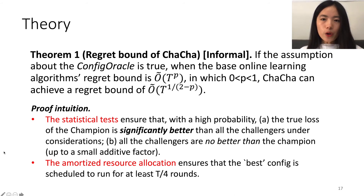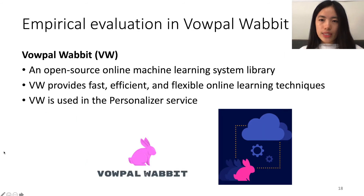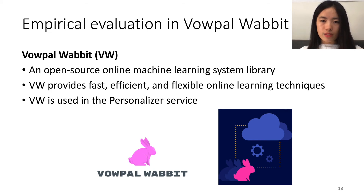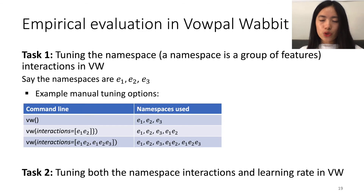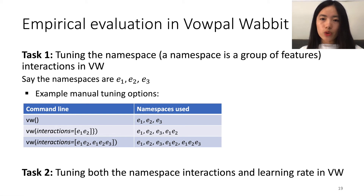For empirical evaluation, we tested our method in Vowpal Wabbit, which is an open-source online machine learning library. We performed the evaluation on two AutoML tasks. The first task is to tune namespace interactions in Vowpal Wabbit — a namespace is a group of features — and by adding namespace interactions, we are adding additional features generated from the corresponding groups of features.